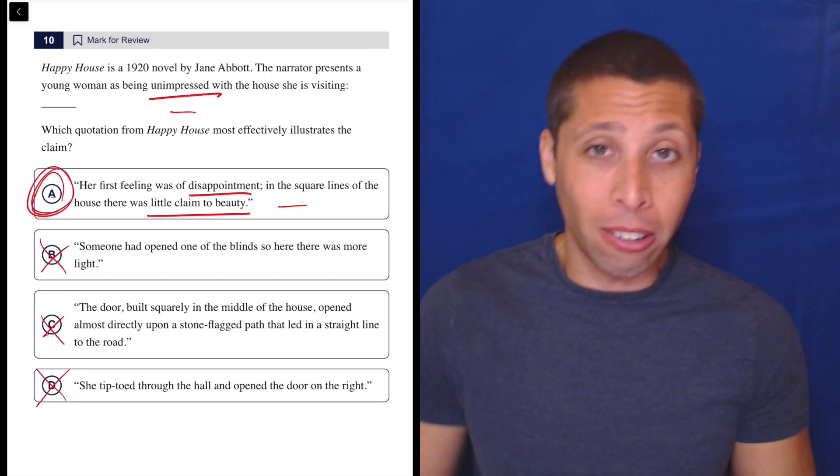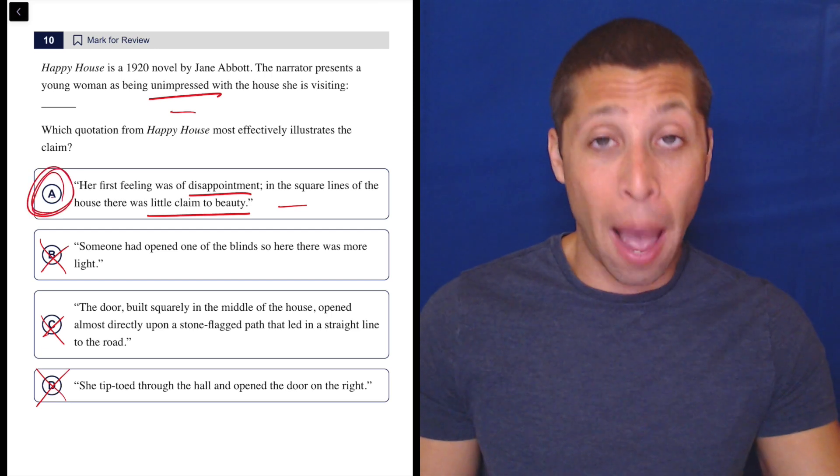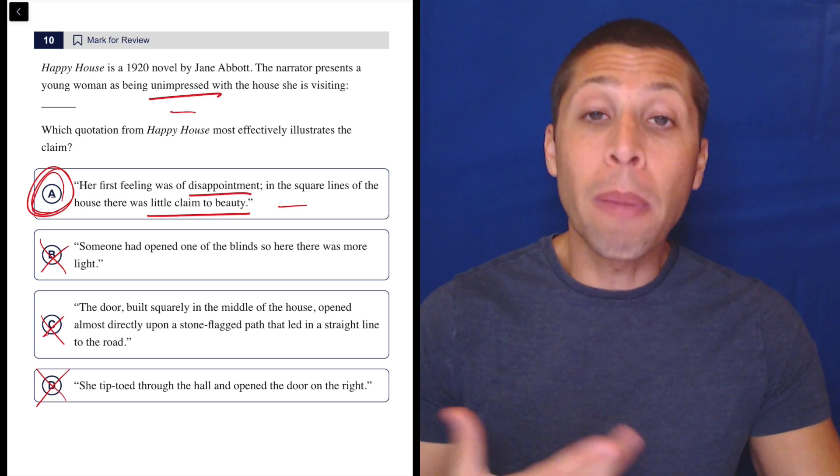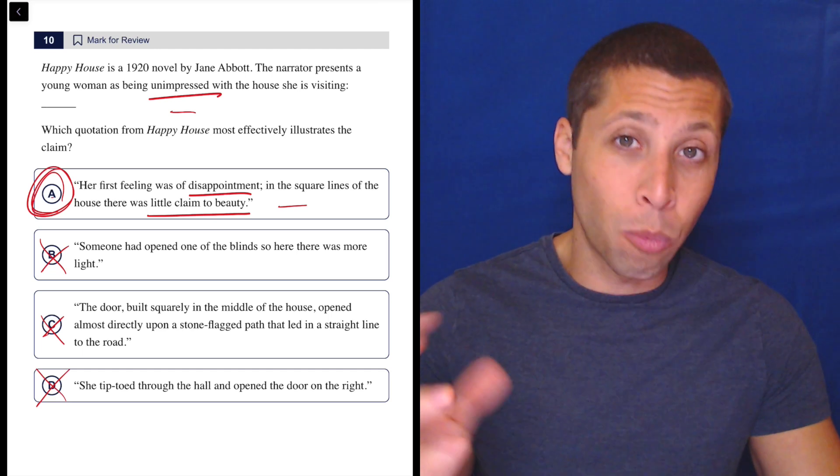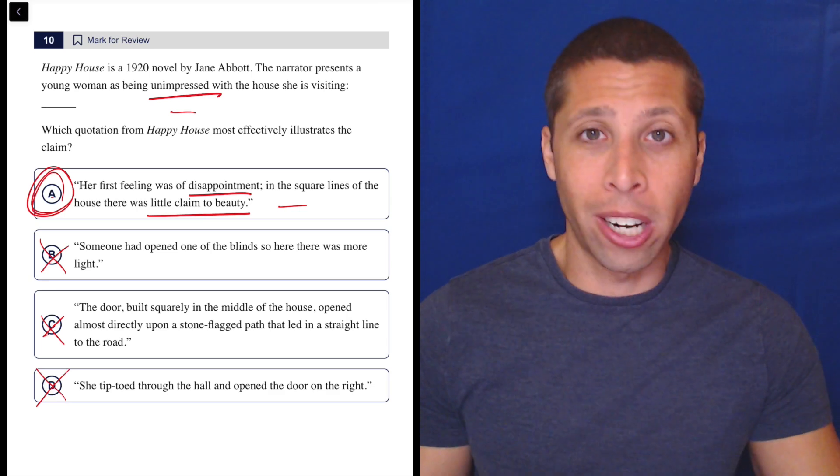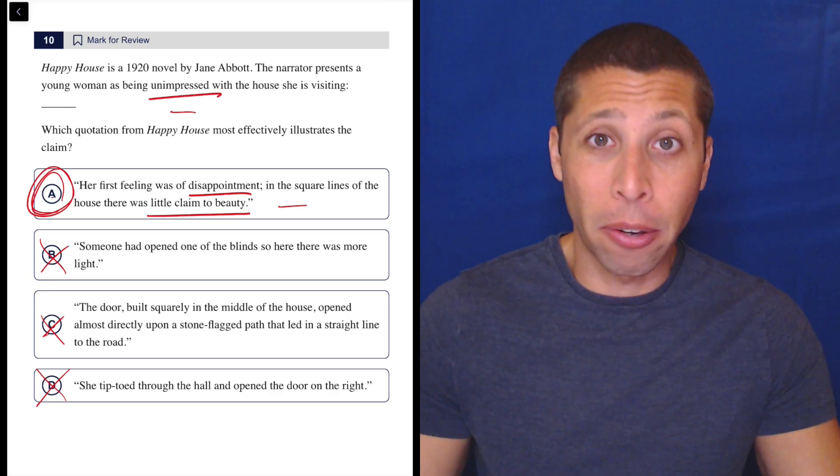So yeah, A is very clearly the right match. These illustrate the claim questions end up being more about vocabulary than anything else. We don't really need to understand what we're reading. We just need to make matches between the strong words in the passage and similar strong words in the choices. Don't try to understand it on some deeper level. Just whatever the most clear match is, that's probably the right answer.